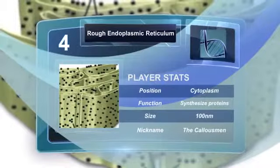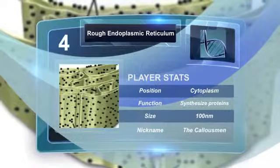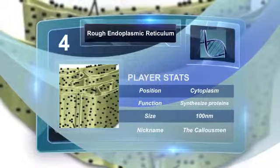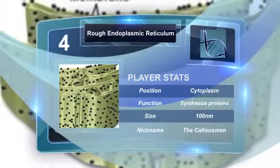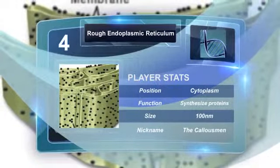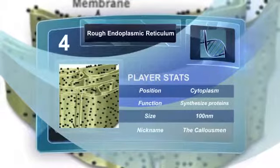The rough endoplasmic reticulum is a eukaryotic organelle that forms an interconnected network of tubules within the cell. The endoplasmic reticulum is used to synthesize proteins.